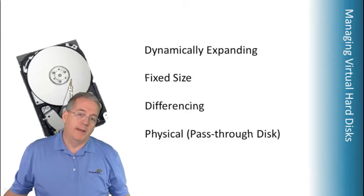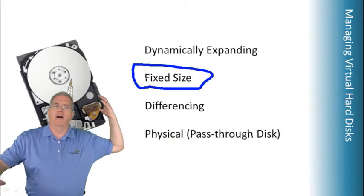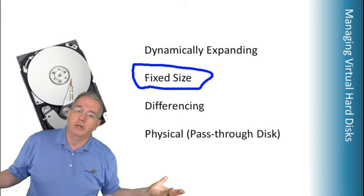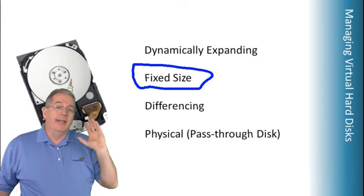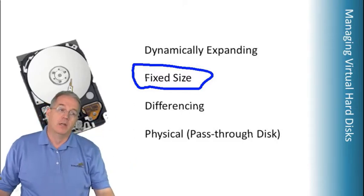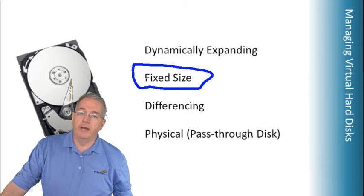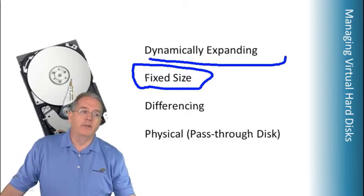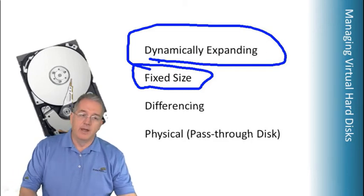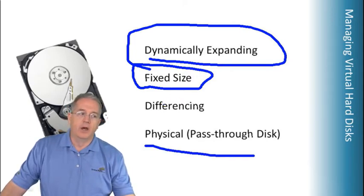That's where we get into fixed size. With fixed size, you say you want a 50 gig hard drive — boom — it makes a file that's 50 gig. It's not going to get larger or smaller, and it will consume all that space the moment you create it. The advantage is no fragmentation because it's already expanded, so you don't run into the write impact you'd have with dynamically expanding. It's faster than dynamically expanding.